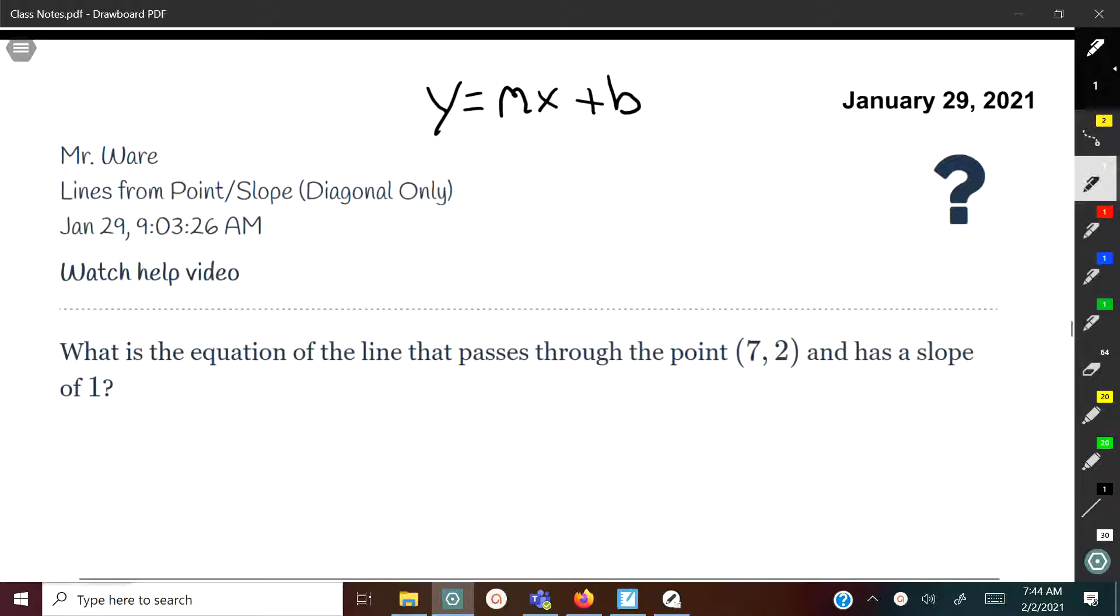When we write it, we'll have x and y as the variables, and m and b, which are the slope and y-intercept, will be numbers. To write the equation, we need to figure out what m is and what b is. We just need to find those two things.